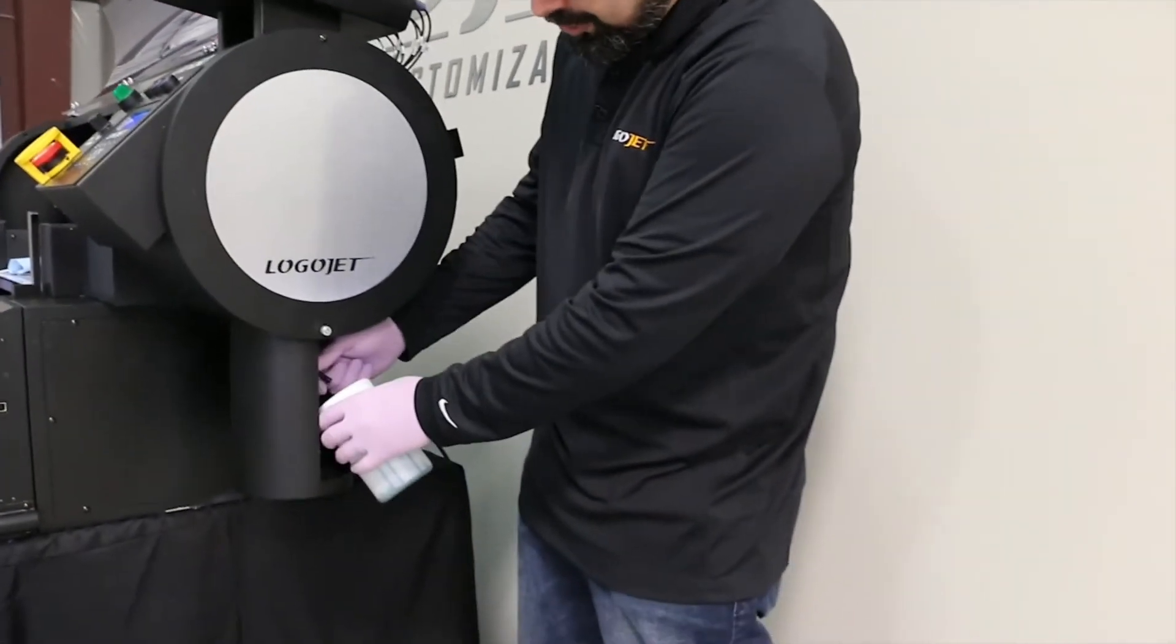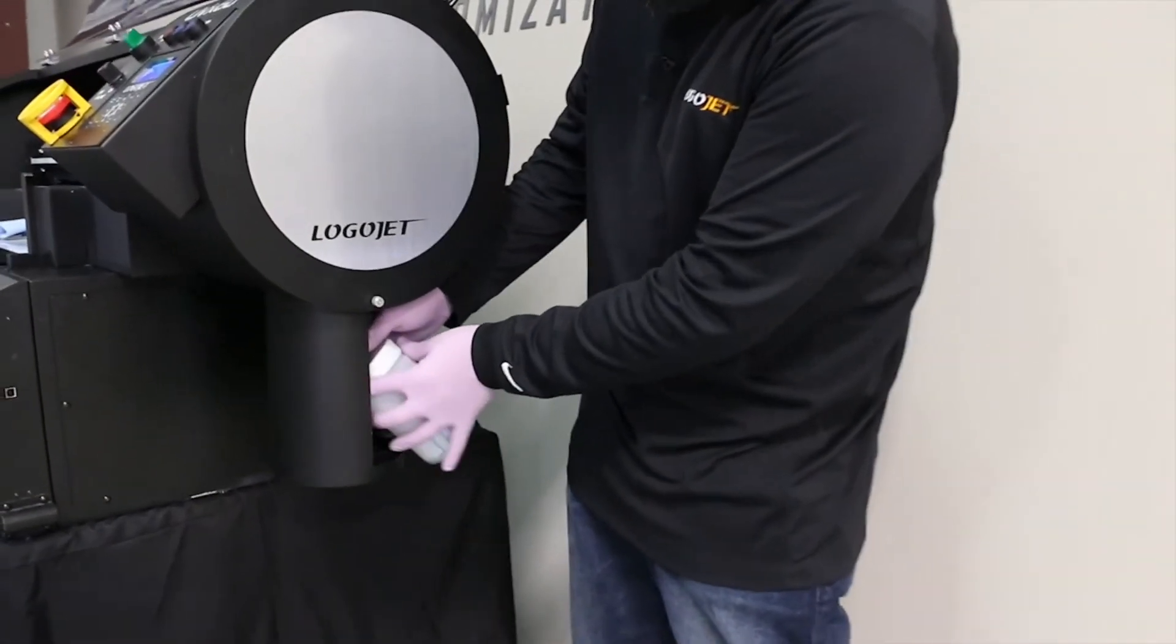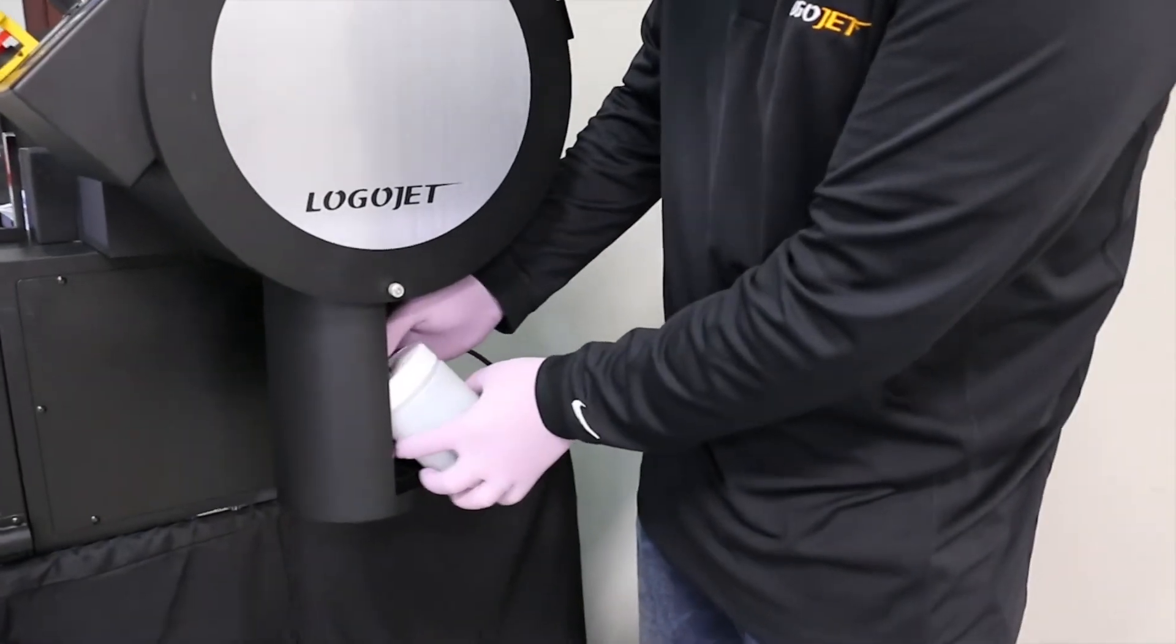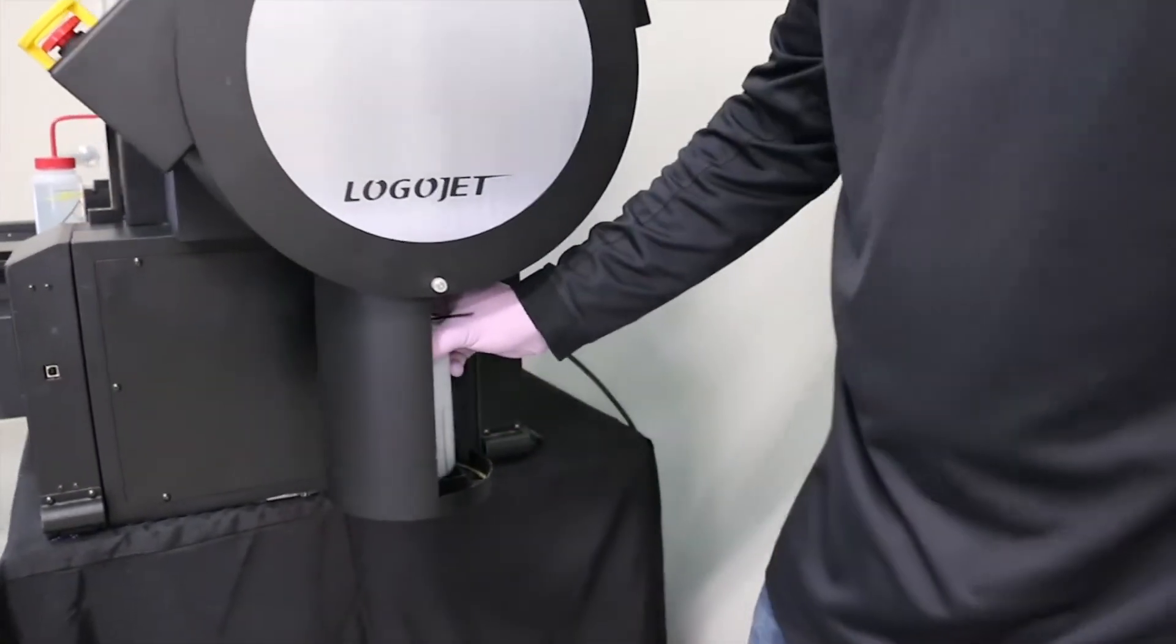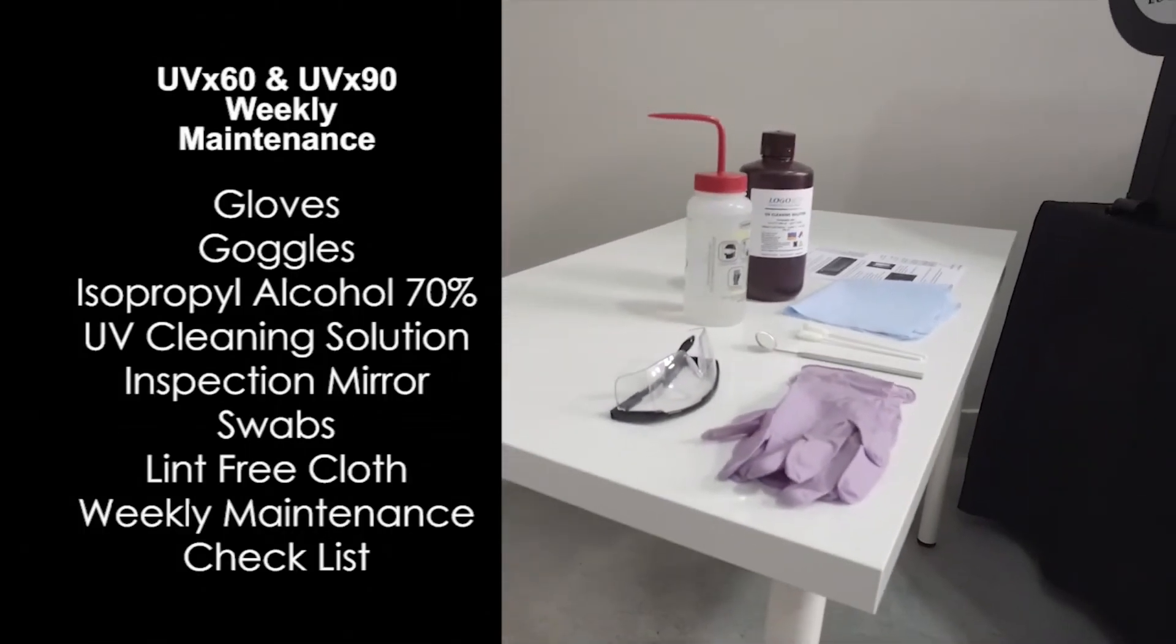Once it's empty, make sure you put it back, putting the tube back into the bottle so that you don't end up with a mess. And then you are done with the weekly maintenance procedure.